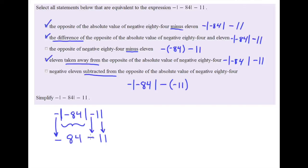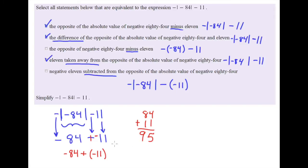Now I apply the rules for subtracting integers using the cross-the-line, change-the-sign method. I cross the subtraction sign and change the sign, giving me negative 84 plus negative 11. Since both numbers are negative, I add 84 and 11, making the result negative 95. The answer is negative 95.